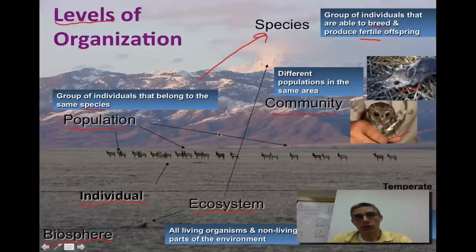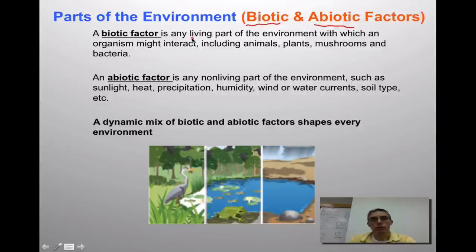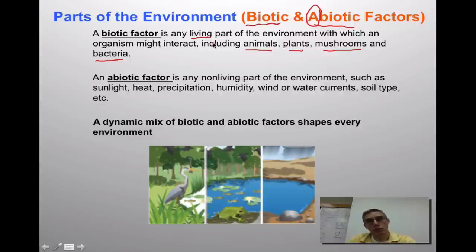When you look at any type of ecological system, you need to identify the parts of that environment — we call them either biotic or abiotic factors. When you use the word biotic, that prefix B-I-O refers to any living part of the environment — good examples would be animals, plants, mushrooms, and even bacteria. The opposite would be abiotic factors — putting the letter A in front means you're looking at the non-living parts of the environment.